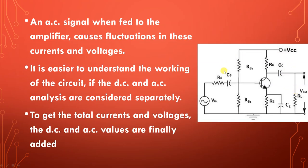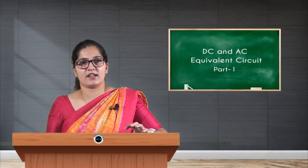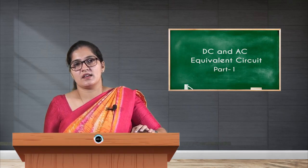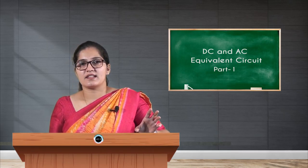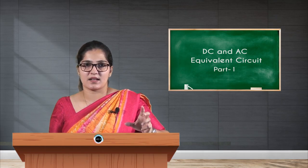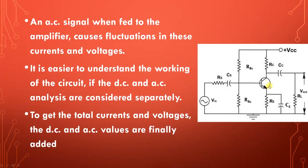In this circuit, both DC and AC conditions prevail. In order to understand the working of this CE amplifier, if DC and AC components are analyzed separately, that will be easier to understand. To get the total currents and voltages, the DC and AC values are finally added. Now let us separate AC and DC and then combine them.